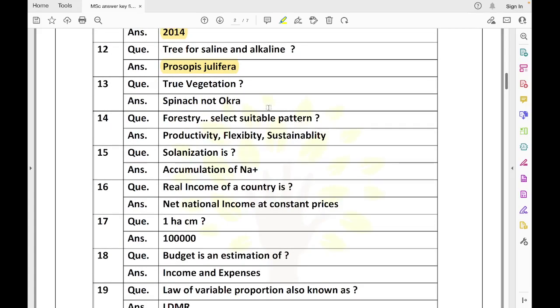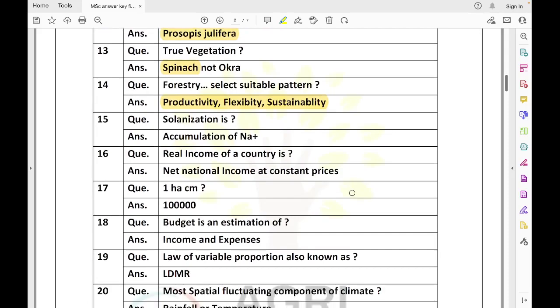Which is a bacterial disease? Crown gall caused by Agrobacterium tumefaciens is a bacterial disease. Propagation method used in rose is T-budding. Unit of development of integrated rural development project was village. Extension that is used for uplifting the poor was emancipatory extension. The agroforestry policy currently in place is from 2014. Next, the tree for saline and alkaline soil is Prosopis juliflora.